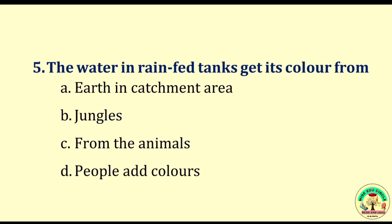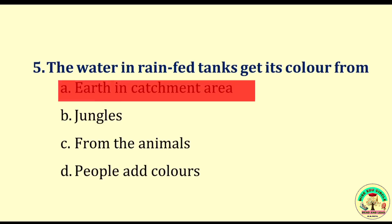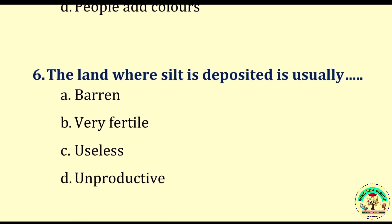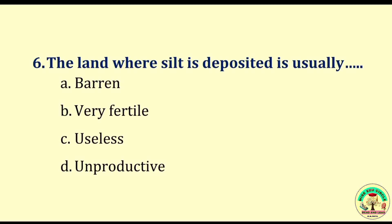Question number five: The water in rain-fed tanks gets its color from — earth in catchment area, algae, from the animals, or people and colors. The right answer is earth in catchment area. Question number six: The land where silt is deposited is usually — barren, very fertile, useless, or unproductive. The right answer is very fertile.